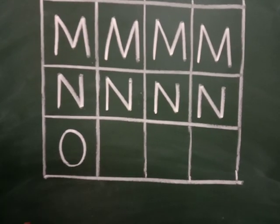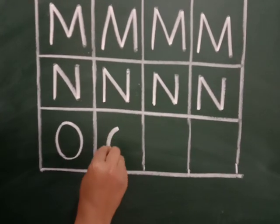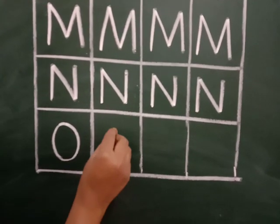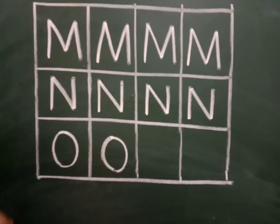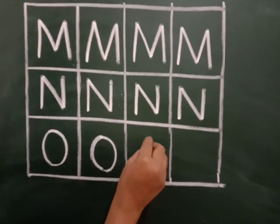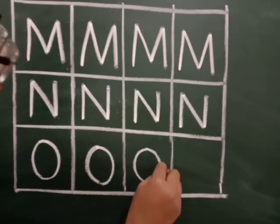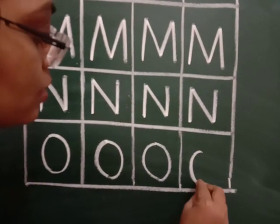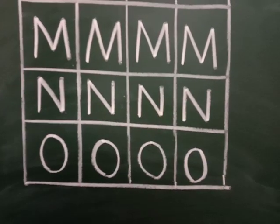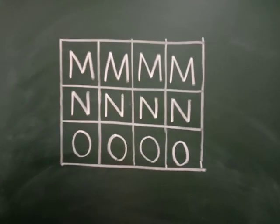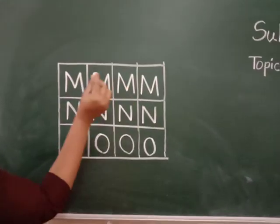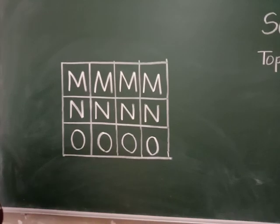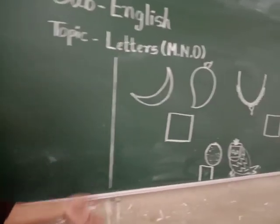Now letter O. For easy writing you can write one half circle from this side and another half circle from this side — this is letter O. One half circle, another half circle makes O. So likewise, students, you have to do practice of strokes of writing letters M, N, and O in your square line notebook.